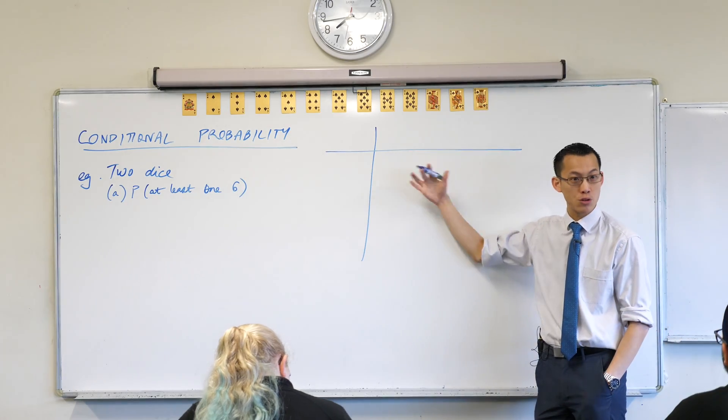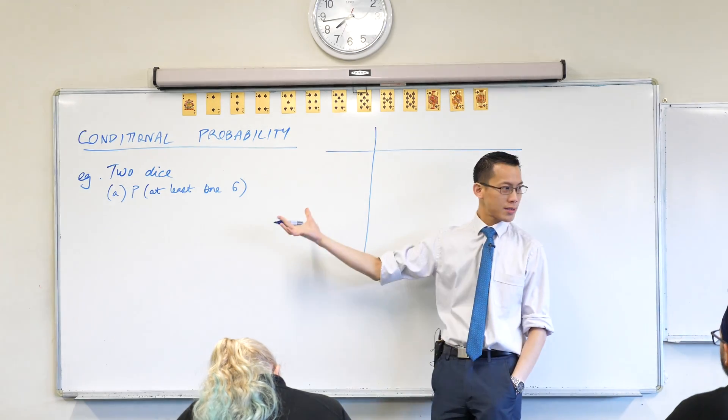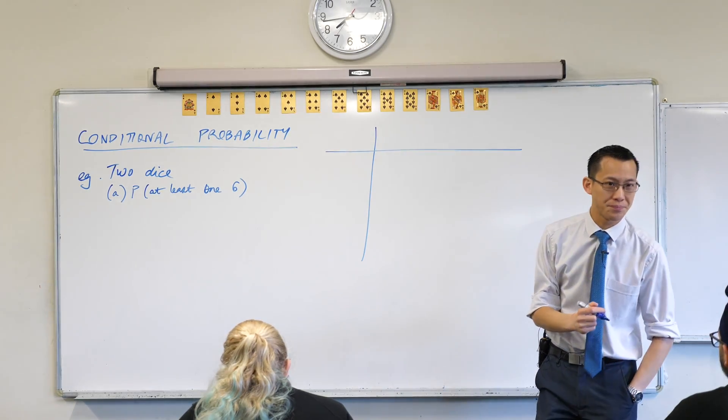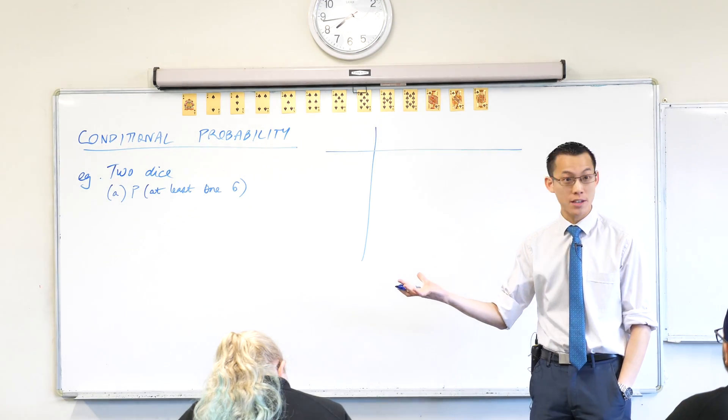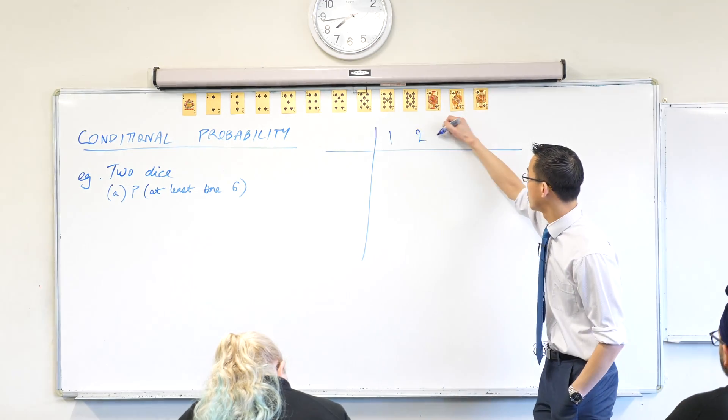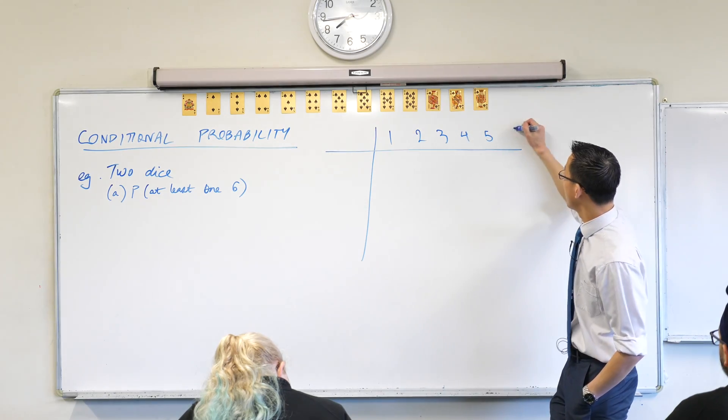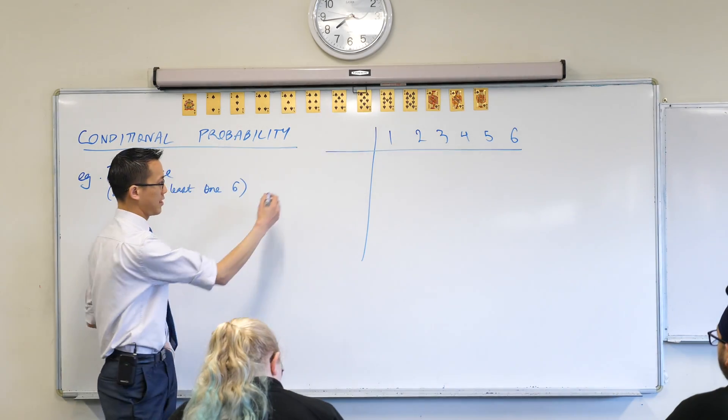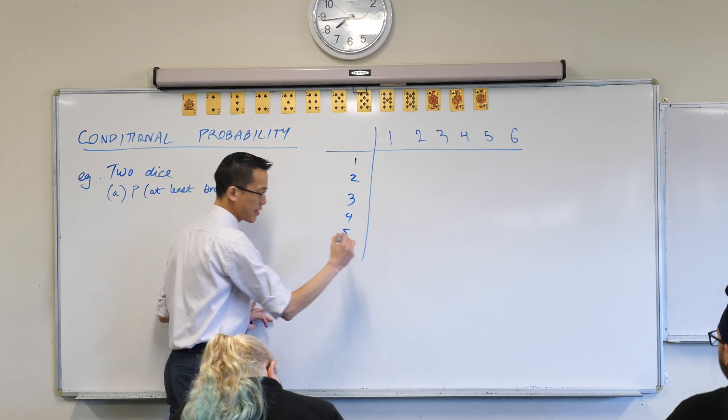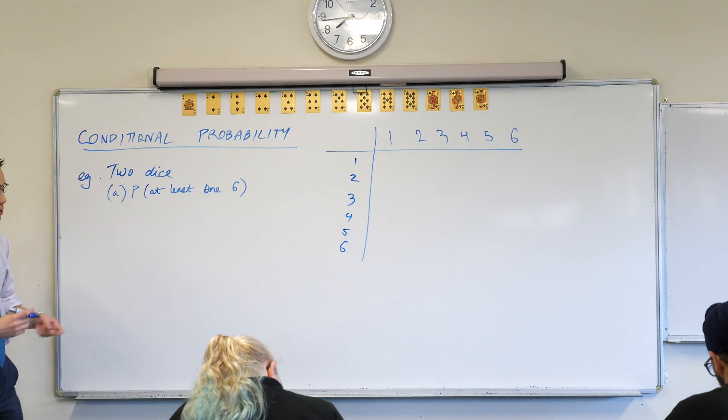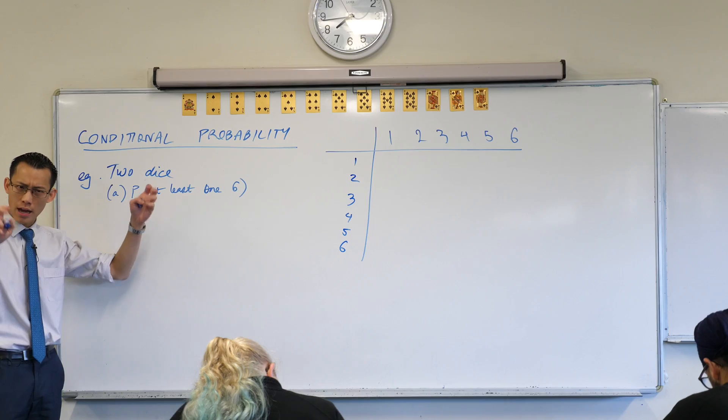There are two dice. What are the options on each of the dice? What could I possibly roll? One, two, three, four, five, six. So here's one of the dice: one, two, three, four, five, six. And then I've got the other die which happens to be identical, so one, two, three, four, five, six.